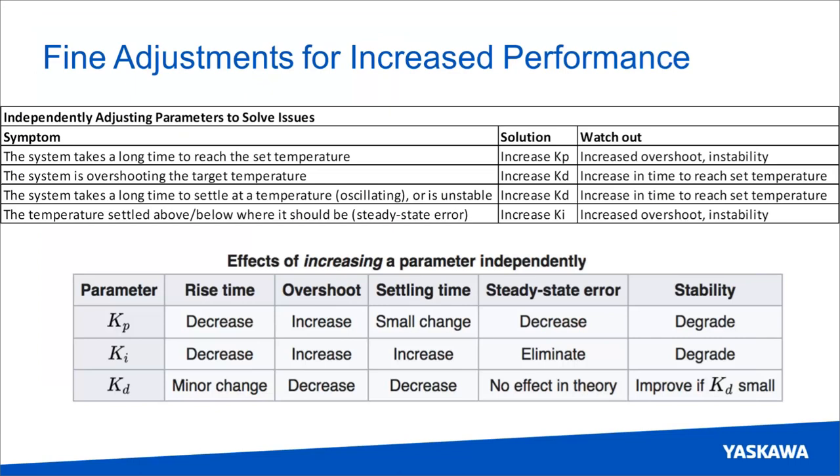So you can also do some fine adjustments for increased performance once the gains are calculated. And the function block on its own will automatically achieve 90% to 95% of the most ideal performance in most cases. But here's a guide to follow if you would like to manually tune the system. So you can look at the bottom table to see how increasing each parameter independently will affect the system. And the opposite will be true when you decrease each parameter. And just to give a little glossary, the rise time is the amount of time it takes the system to reach the target. And the settling time is the amount of time it takes the system to stop oscillating above and below the target. And the steady state error is how far the system settles above or below the target. If the target is 10 and the system settles at 9, then the steady state error is 10%. So the stability is determined by how many oscillations there are before the system settles. Less oscillations and the system is considered more stable.